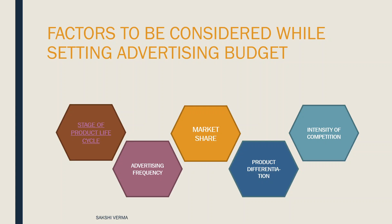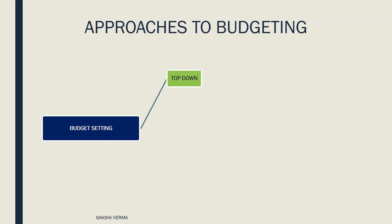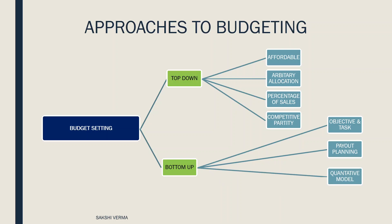I hope the factors are clear. Moving on to the next topic: approaches to budgeting. There are two approaches to setting the budget. The first is the top-down approach, which includes four methods: affordable method, arbitrary allocation, percentage of sales, and competitive parity. The second approach is the bottom-up approach, which includes objective and task method, payout planning, and quantitative models. Management must decide which approach to take, and then choose the appropriate method within it.